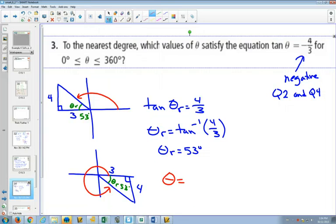From the first picture, how would you figure out that red angle? From our second triangle, how would you figure out that angle? 360 minus 53. And we get 307 degrees.